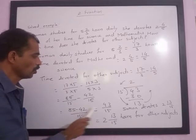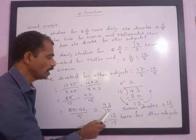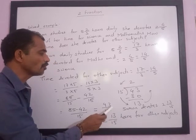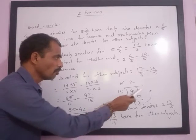So Suman devotes 43/15 hours of time for other subjects. Now if you want to write this in mixed fraction, we have to solve this: 43 divided by 15.